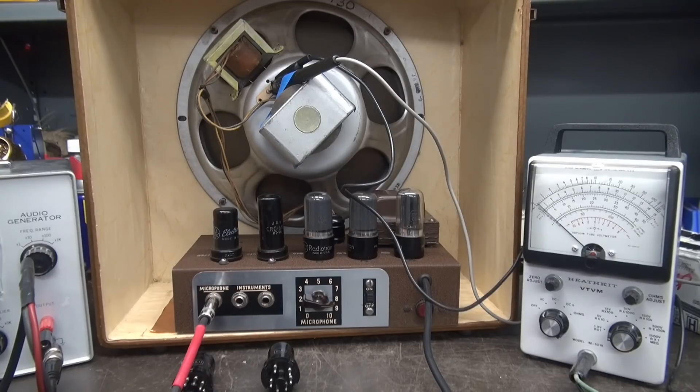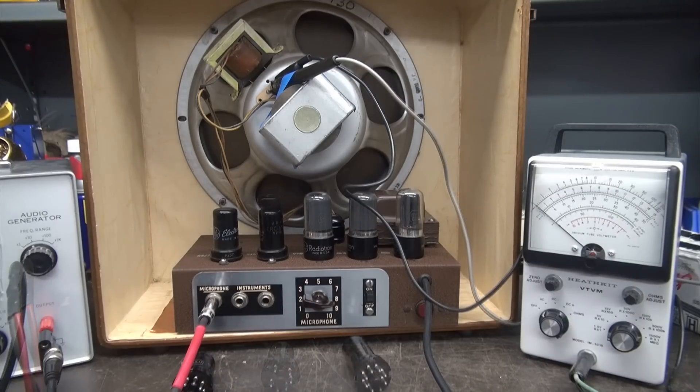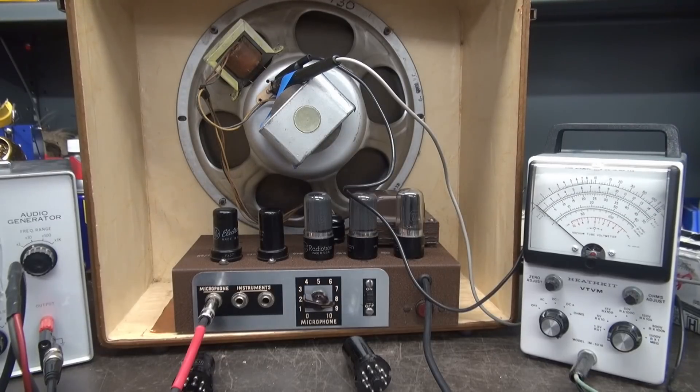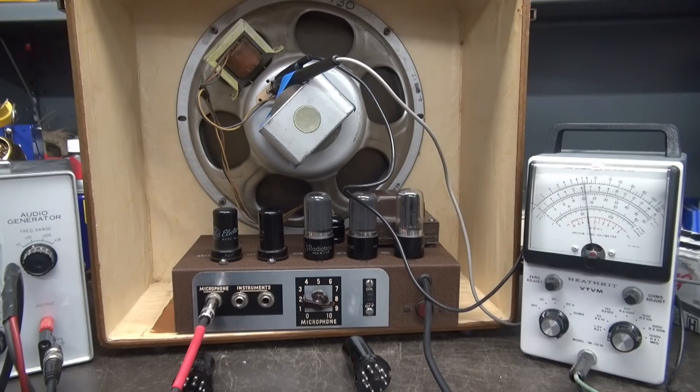Now I'll put in the 6J5 and I'm not going to interrupt the volume setting. All right. Back on the air. Now we have the 6J5 installed. Same deal. Here is the guitar. I myself cannot tell any difference.